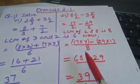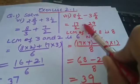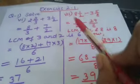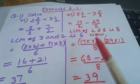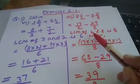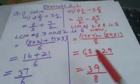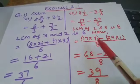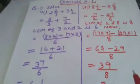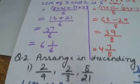Divide the LCM by each denominator and multiply the result with the numerator. Here, 8 divided by 2 is 4, and 4 multiplied by 17 gives 68. Since it is minus, write minus. Then 8 divided by 8 is 1, and 1 multiplied by 29 gives 29. So this is 68 minus 29 over 8. You will get the result. If you want to convert to a mixed fraction, divide the fraction and you will get the mixed fraction.